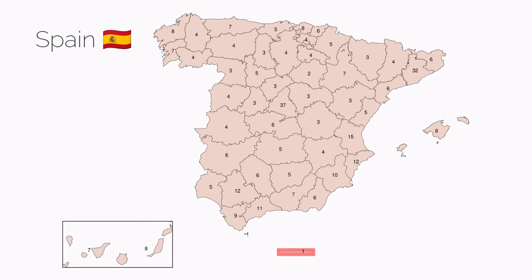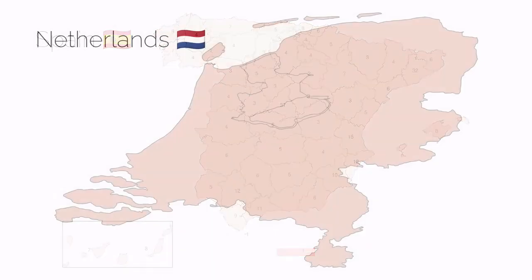Our final example is the Netherlands. This map shows the single electoral district used in the Netherlands. All 150 members of the Dutch House of Representatives are elected in a single nationwide electoral district, and so the district magnitude is 150.